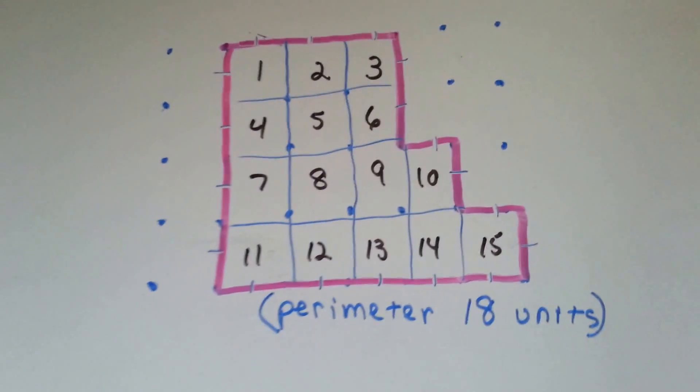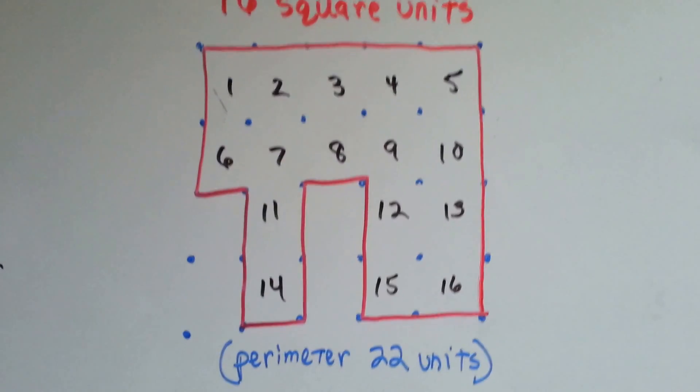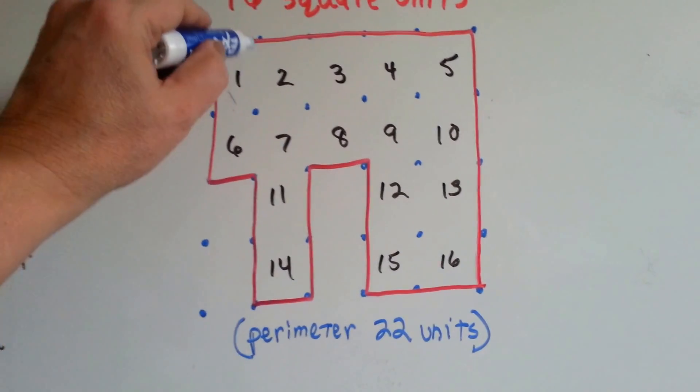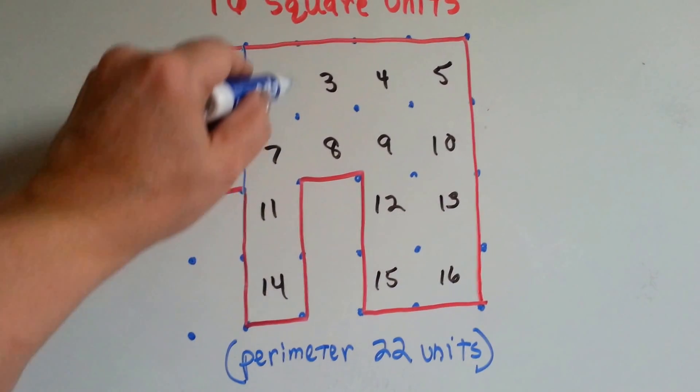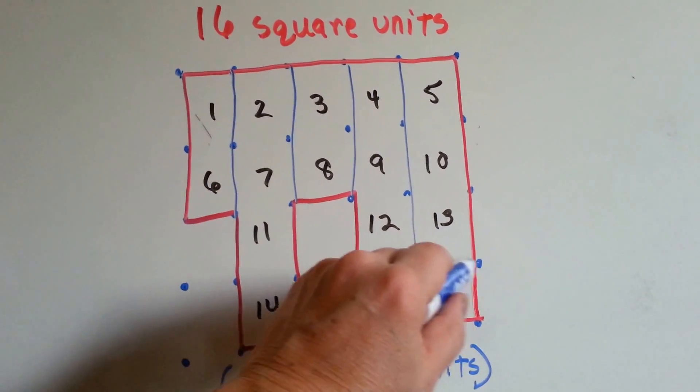Eighteen units for the perimeter. All right? Let's check this one out. Here's a shape, a weird shape, that's got square units.